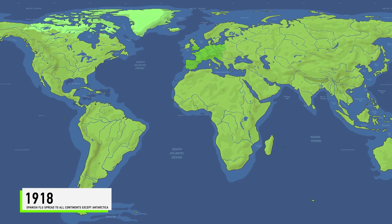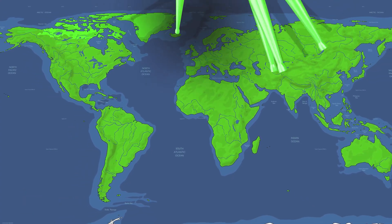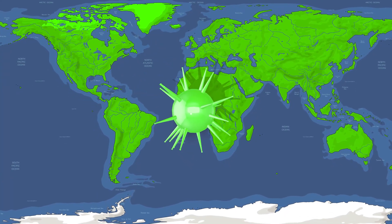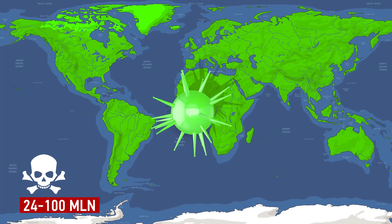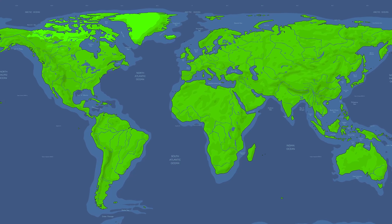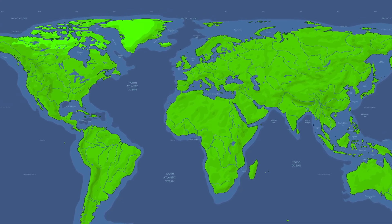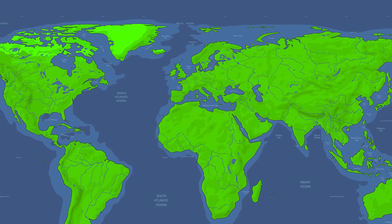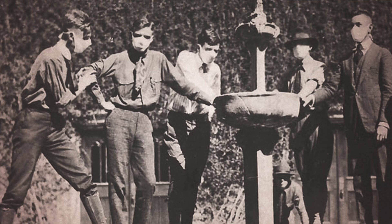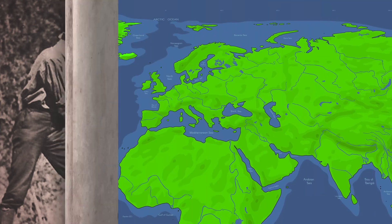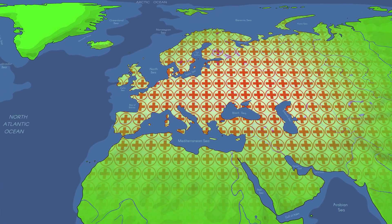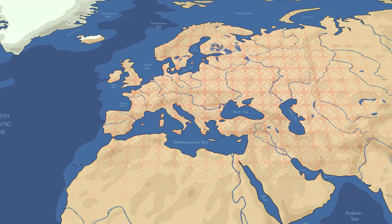In 1918, the virus quickly spread to all continents except Antarctica, bringing the total number of infected to no less than 560 million. The Spanish flu caused the deaths of between 24 and 100 million people. Extreme lethality, sometimes over 21%, forced authorities to institute restrictive measures such as local quarantine, restrictions on businesses, wearing masks in public places, and a handshake ban. The large-scale epidemic prompted governments to begin building an effective medical system to serve the entire population.